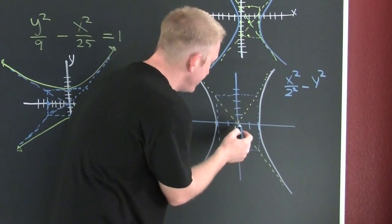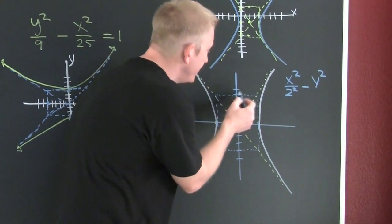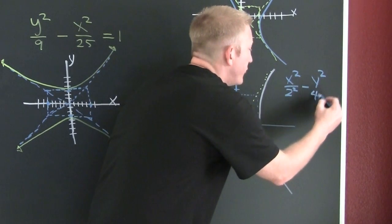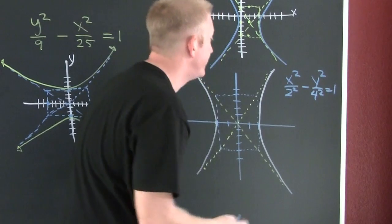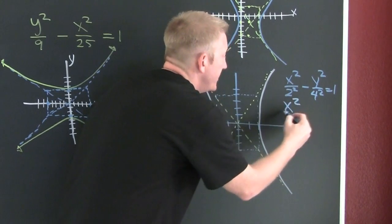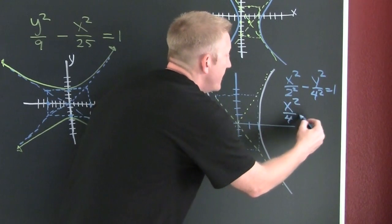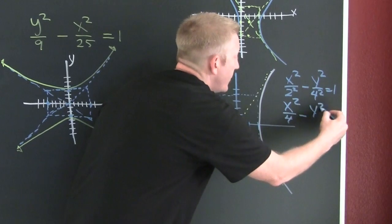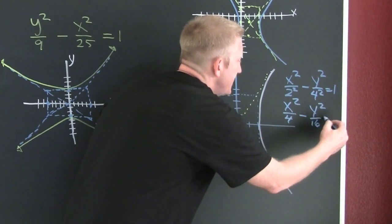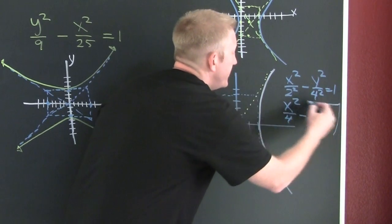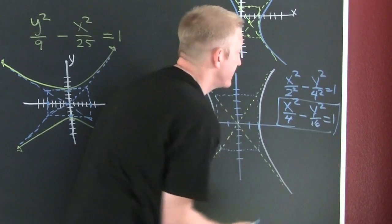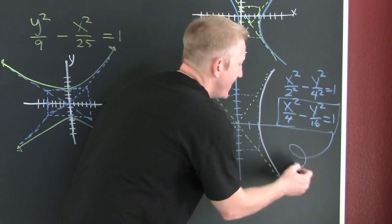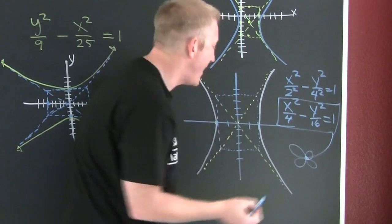X squared divided by four minus Y squared divided by 16 is one. You're done. Last box of the day, but this one has a flower.